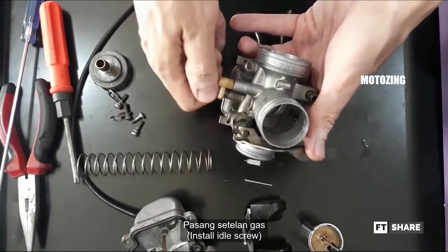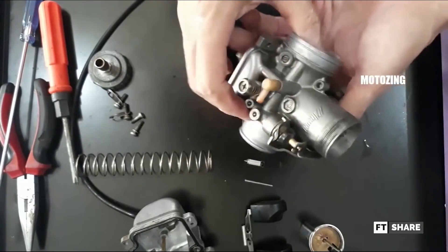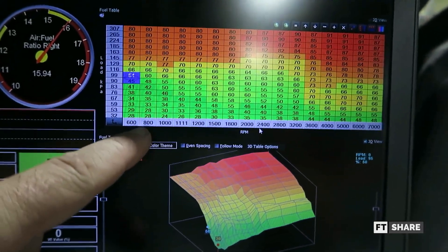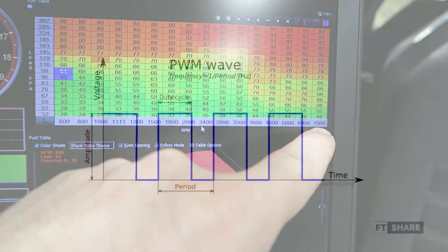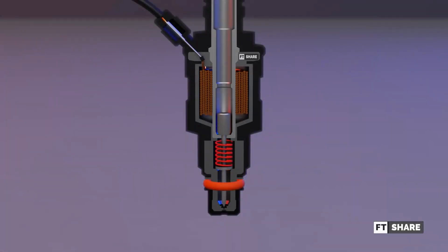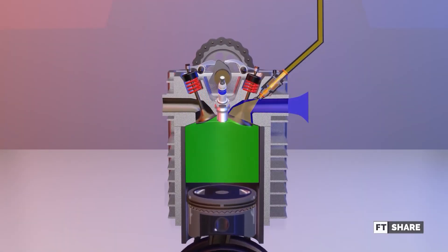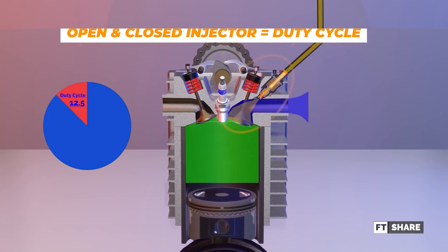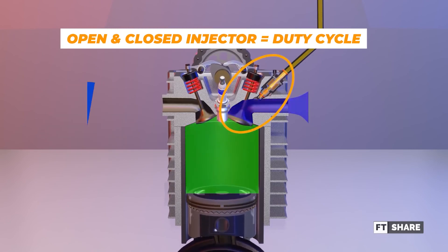In addition, injectors can still be customized like carburetors by manipulating PWM through a computer by performing remapping. PWM stands for pulse width modulation, which is used to regulate the opening and closing of the injection. In a four-stroke engine with injectors, the injection will open and close every one power cycle. As we know from the previous video about four-stroke engines, there are two engine rotations in one power cycle.